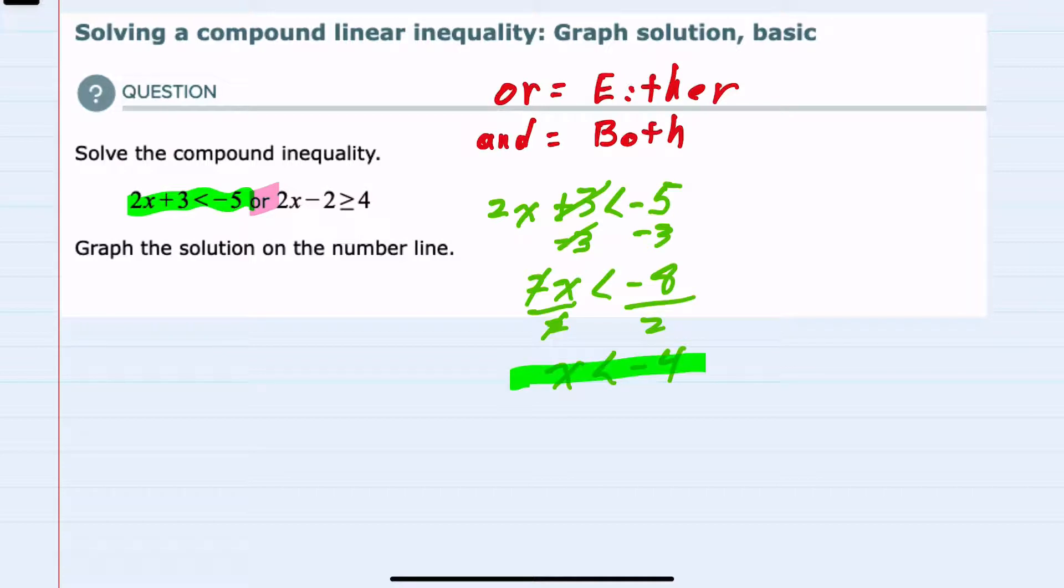Notice the inequality sign stayed in the same direction because we never multiplied or divided by a negative. That would be the only thing to change the direction of that inequality.